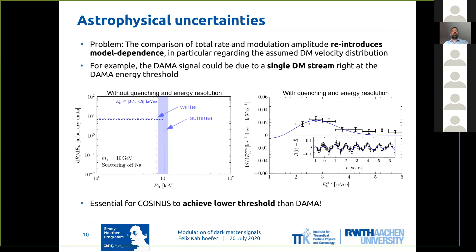The problem with this is that as soon as you need to compare a total rate and the modulation amplitude, you reintroduce model dependence — not regarding the kind of recoil rate in the detector, but most importantly regarding the assumed dark matter velocity distribution.